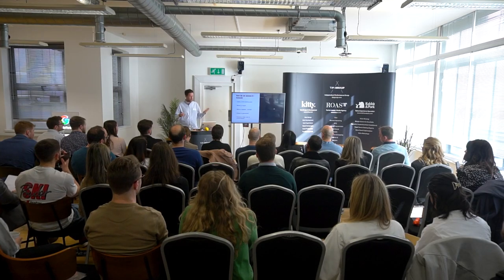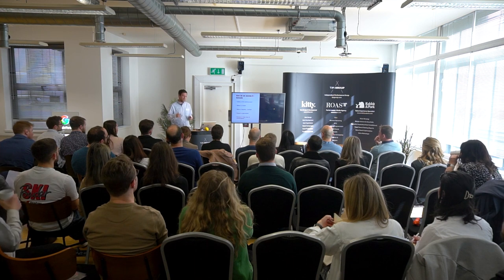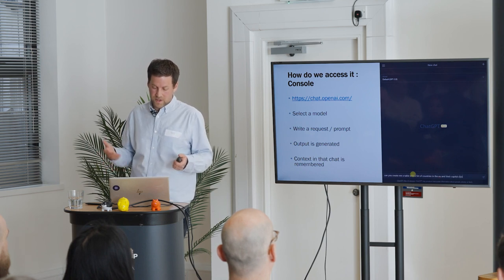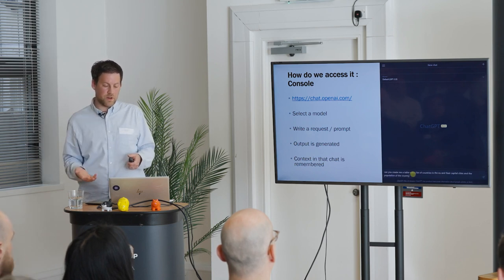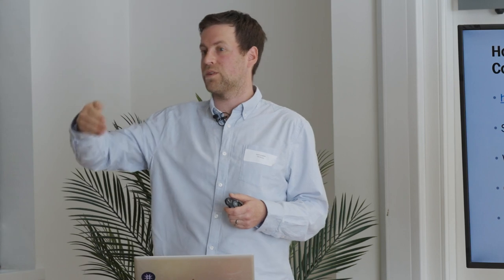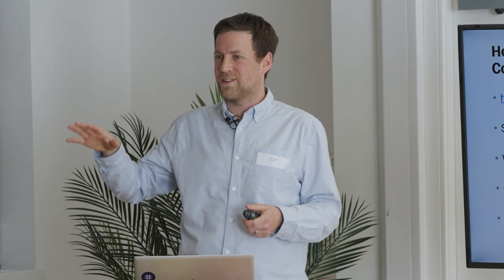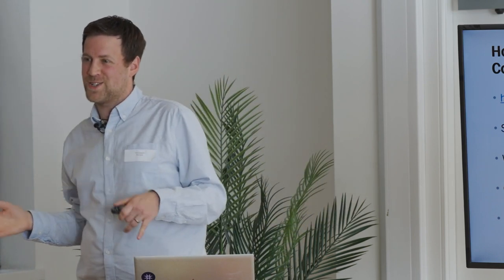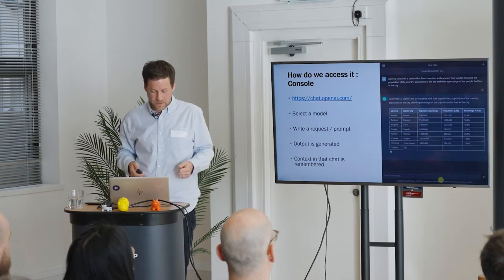So how do we access it? You've probably seen screenshots of this — this is the console. You can pay $20 a month for the premium version, which gives you access to the latest version and it's quicker. You select a model and write a prompt. In this example we're asking it to write a table of countries in the EU, get the capital cities, and get the populations. The output is generated, and then in that chat it keeps context, so you can ask it another question. Those chats are saved — great in our account because we all share one, so you can see what everybody else has been asking it: who's been trying to write resignation letters, birthday card suggestions, etc.